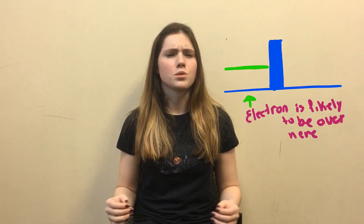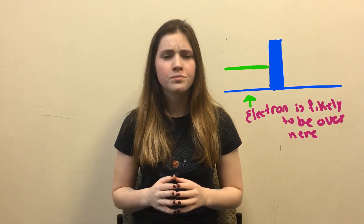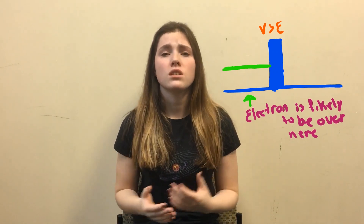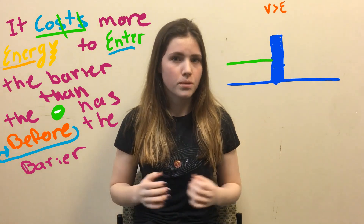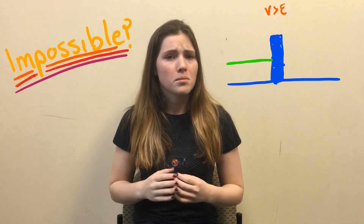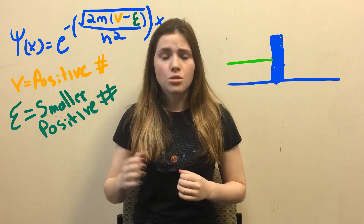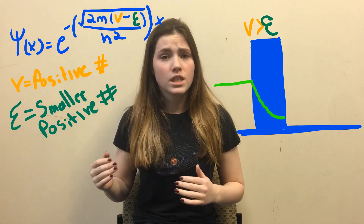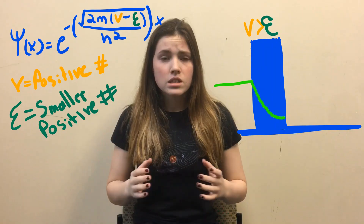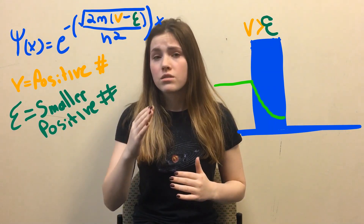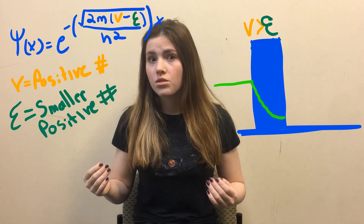Something changes once we cross into the barrier. The amount of potential energy necessary for something to be in this barrier exceeds the amount of energy that the electron has before the barrier. You would think this would make it impossible for the electron to be there, but when we plug these into our function, it turns out that the Schrödinger equation becomes an exponential decay function. This means that the probability of the electron crossing through the barrier is very low, but still there.